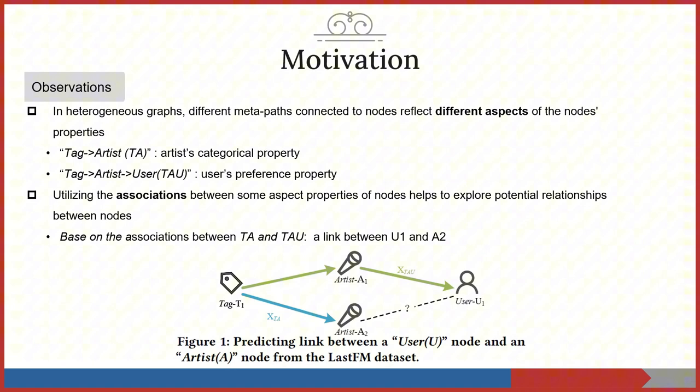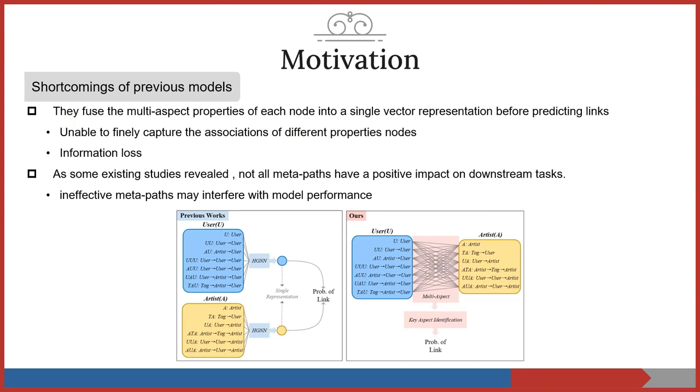Second, we also found that utilizing the associations between some aspects of nodes helps to explore potential relationships between nodes. However, for previous works, it's difficult to capture the multi-aspect associations between nodes. As shown in the left figure, before predicting links, previous works usually fill the multi-aspect properties of each node into a single-vector representation.